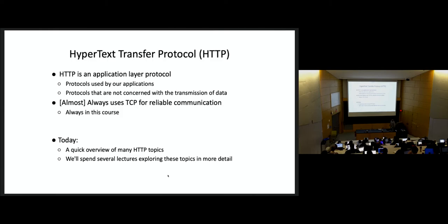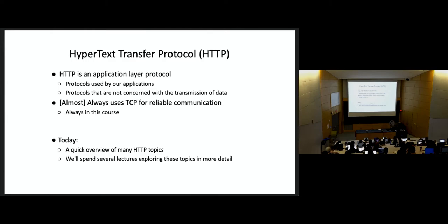HTTP is a request-response protocol, and it's an application layer protocol. Application layer means that our applications that we write as software engineers care about this protocol. Our software, our applications, don't care about TCP or IP — those are more operating system level protocols, or in IP's case, router level protocols. Applications we write care about HTTP and need to speak HTTP. I'm pretty sure HTTP is always communicated over TCP — if you use UDP for this, things would get bad quickly.